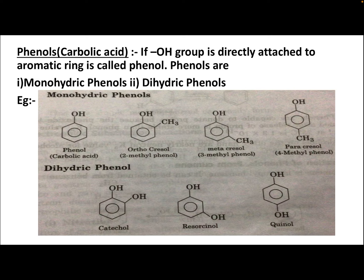In monohydric phenols, only one OH group is attached. In dihydric phenols, two OH groups are attached. An example of monohydric phenol: benzene ring with OH is phenol or carbolic acid. With OH and CH3 in the ortho position (1,2 position), it is known as ortho-cresol.